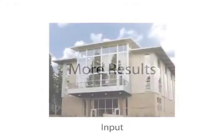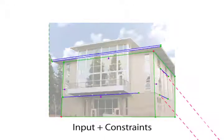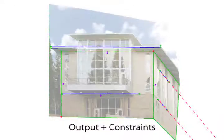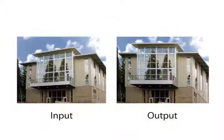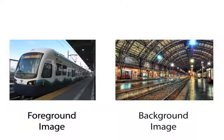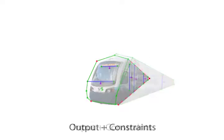Here are some more results. In this example, we make the building look more like an oblique projection, where all the parallel edges of the building are parallel in the picture. In this compositing example, we segment a train out of one image and warp it so its vanishing lines match the tracks in the target image.